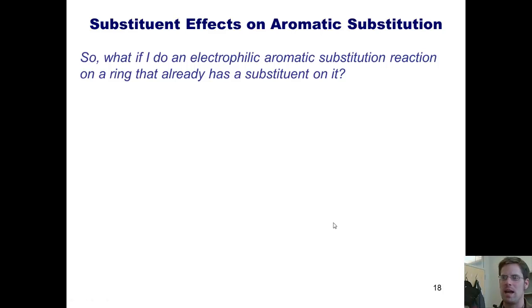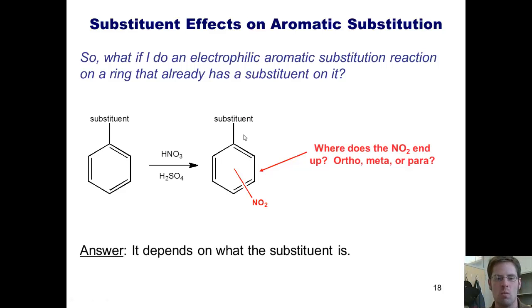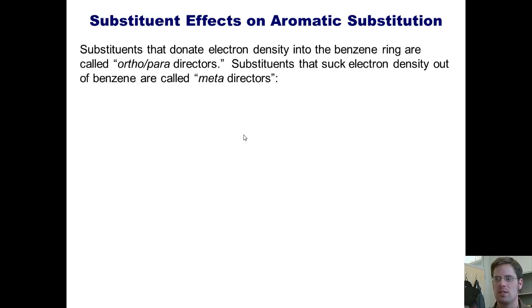This now provides the necessary background for us to begin addressing a very significant question. What if I do an electrophilic aromatic substitution reaction on a ring that already has a substituent on it? Let's say, for example, that I have a substituted benzene ring here, and I run a nitration reaction on it. Where does the NO2 end up? Does it end up ortho, meta, or para to the initial substituent? The answer to that question simply is, it depends on what the first substituent is. I'll now teach you how to categorize different substituents and use them to predict exactly where new ones will go.